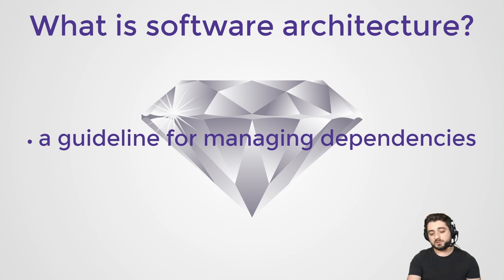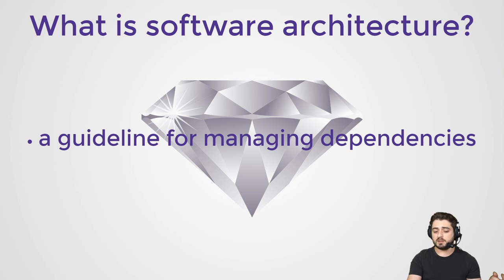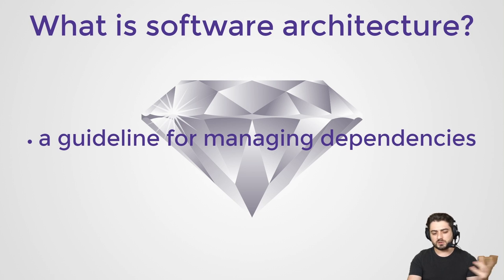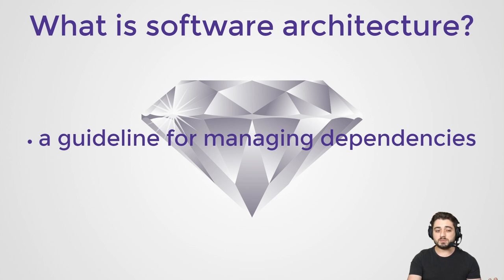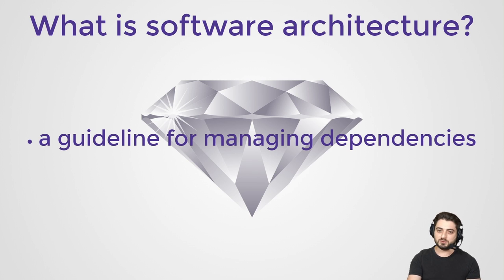What is architecture? We could talk about it for days, but one bullet point should be enough. Architecture is simply a guideline for managing dependencies. It's not about infrastructure or tools or anything like that — it's just about managing dependencies. Depending on your technology stack, you might call them gems, jars, modules, sub-modules, projects, or sub-projects. Naming is hard — you get the idea.